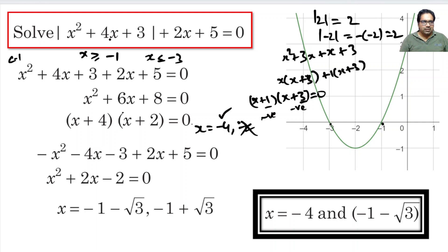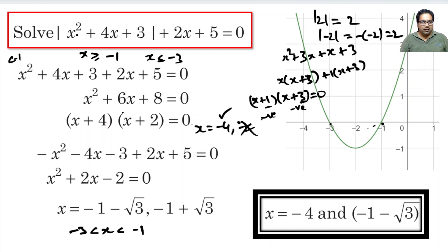Now, Case 2: when x squared plus 4x plus 3 is less than 0, that happens when x lies between minus 3 and minus 1. In this case, the absolute value of this is minus of this, giving minus x squared minus 4x minus 3 plus 2x plus 5 equals 0, which simplifies to x squared plus 2x minus 2 equals 0.